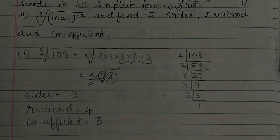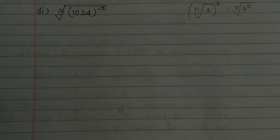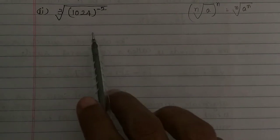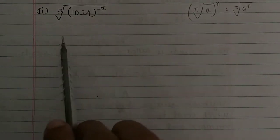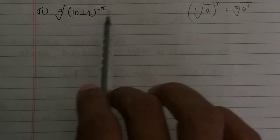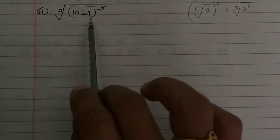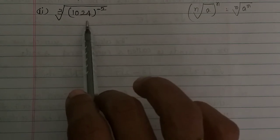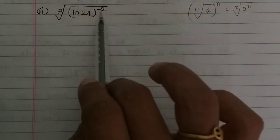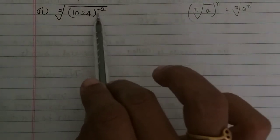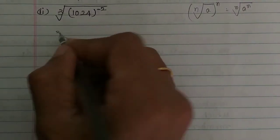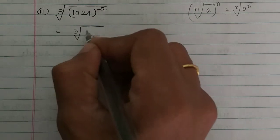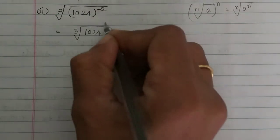Second problem: cube root of 1024 to the power of minus 2. We need to find the simplest form of the cube root of 1024 raised to the whole power of minus 2.